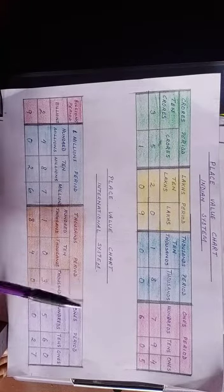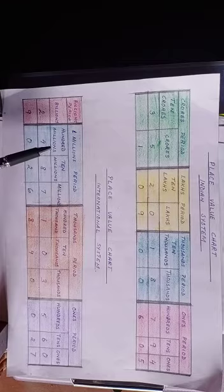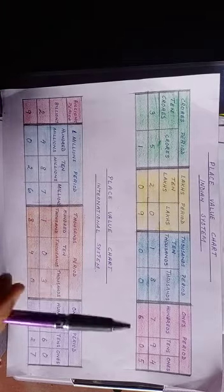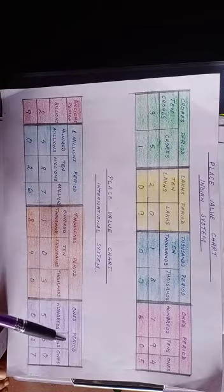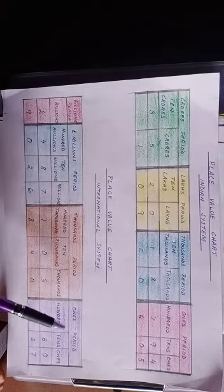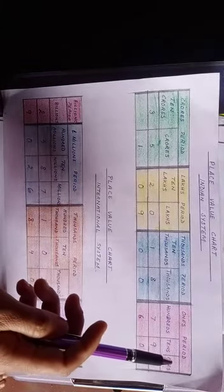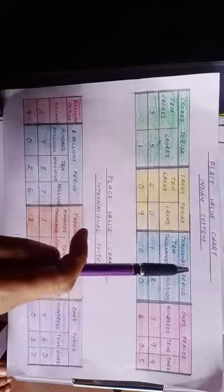In the Indian system, the periods are: Ones, Tens, Hundreds, Thousands, Ten Thousands (10,000), Lakhs (100,000), Ten Lakhs (10 lakhs), Crores, and Ten Crores (10 crores).